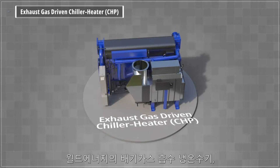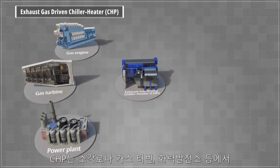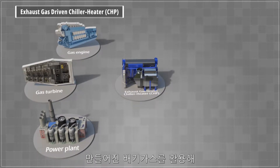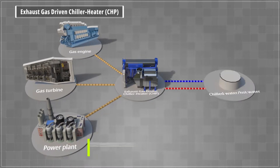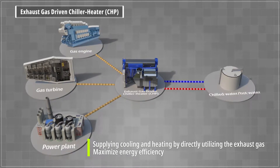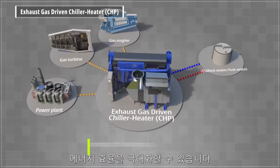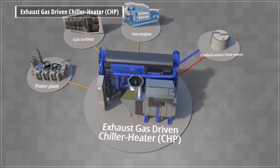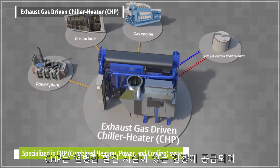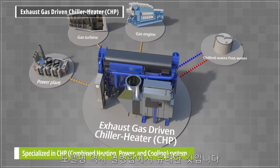World Energy's exhaust gas-driven absorption chiller and heater, also referred to as a CHP type, utilizes exhaust gas from an incinerator or gas turbine to generate cooling and heating directly. Recovery of the exhaust gas with minimal loss maximizes energy efficiency. CHP series are supplied to combined heat and power generation (CHP) facilities.